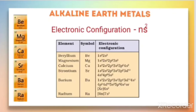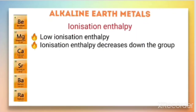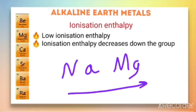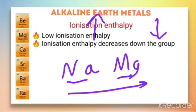Now let us discuss ionization enthalpy. These elements usually have low ionization enthalpy because of their larger size. However, when we compare with the first group elements, they have higher ionization enthalpy, because within the same period, moving left to right, size decreases and ionization enthalpy increases. So magnesium has a smaller size than sodium, and therefore magnesium has a greater ionization enthalpy compared to alkali metals in the same period.